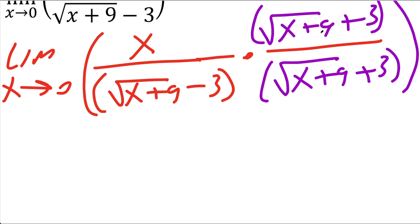And so the square root of x plus 9 plus 3 divided by the same thing is just 1 because this piece divided by this piece would just give us 1 so we're not making any real changes.